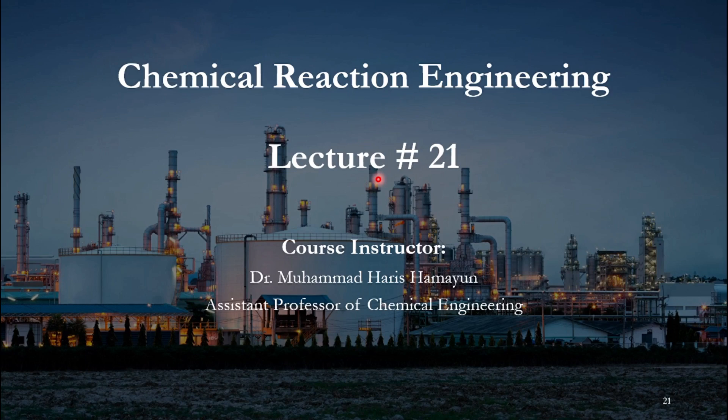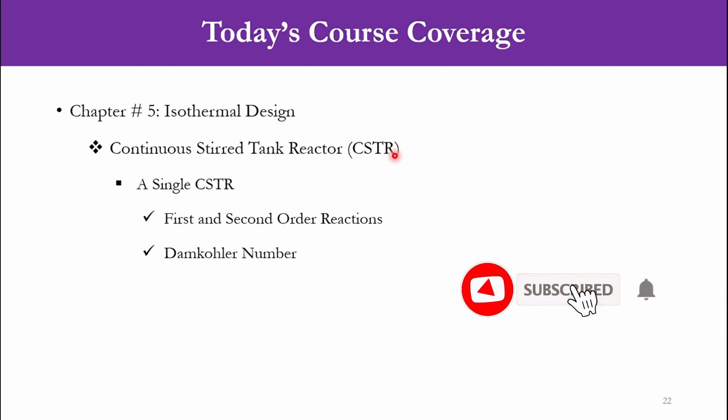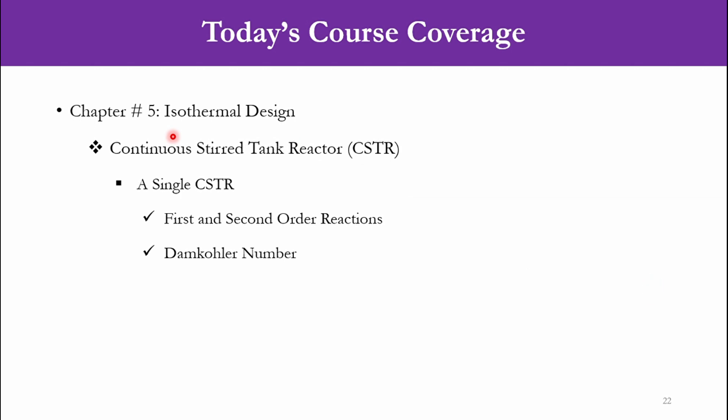Hello everyone, welcome back to Chemical Engineering and Aspen channel. These days we are focusing on the module of Chemical Reaction Engineering, and we are bringing lecture number 21 for our valuable viewers. In today's course coverage we will again focus on chapter number 5, which is isothermal design — building block number 4. In our previous lectures on this chapter we covered the batch reactor, and now we will move to the flow reactors, specifically the CSTR — continuous stirred tank reactor.